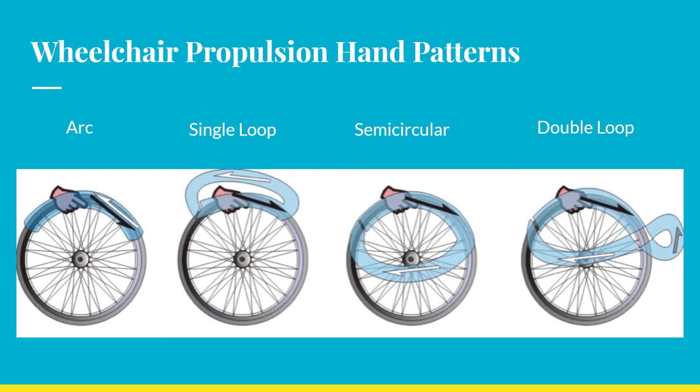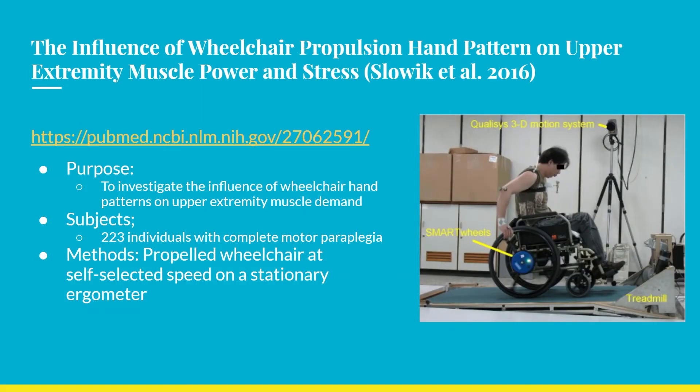Here are four common propulsion patterns. The arc pattern is most used by novice wheelchair users but is the least efficient in terms of energy consumption, having the smallest push angle and shortest recovery time. The semicircular pattern has a slower cadence due to its longer recovery phase and is recommended by current clinical guidelines. A study used 3D handrim kinetic monitors and motion analysis on 223 subjects with complete motor paraplegia, using musculoskeletal modeling and forward dynamic simulations to investigate the influence of hand patterns on upper extremity muscle demand.